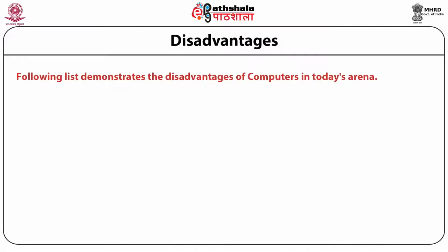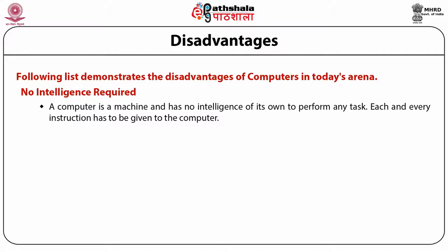The disadvantages of computers include: first, there is no intelligence involved. A computer is a machine which has no intelligence of its own to perform any task. Each and every instruction has to be given to the computer and it cannot take any decision on its own.